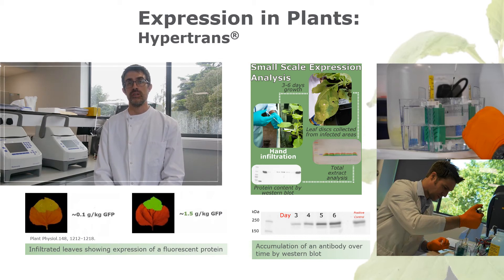We carefully monitor the production of the target protein over time by taking leaf disks from the infiltrated leaves and grinding them up in a suitable extraction buffer. The protein contained in the leaves is then analyzed by western blot using an appropriate antibody. This means we can track the accumulation of the protein over time and pick the best time to harvest.